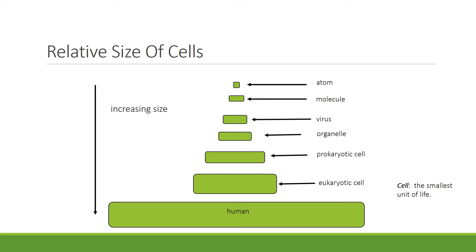A cell is the smallest unit of life. Look at where it lies in comparison to other things. The atom is the smallest, followed by the molecule, which is a group of atoms, followed by the virus. Next is the organelle, then the prokaryotic cell, the eukaryotic cell, and humans. So it ranges from an atom, which is the smallest, to humans, which are the largest in this category.